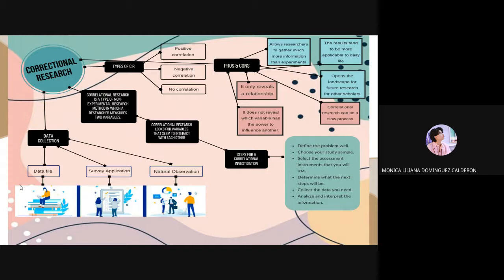Then we have some pros about correlational research. These are that researchers can gather much information than experiments, the results tend to be more applicable to daily life, and another pro can be that it opens the landscape for future research for other scholars. Now we have to talk about the steps for correlational investigation.